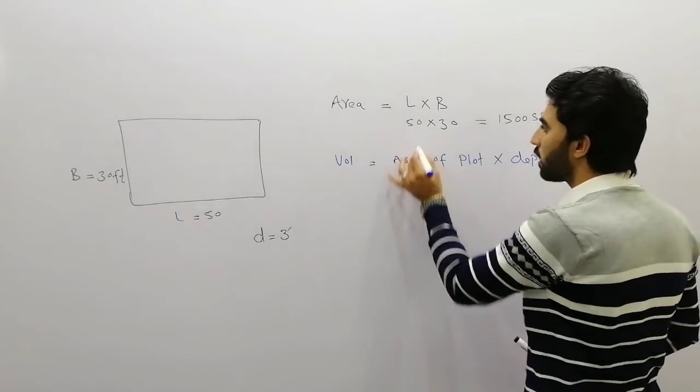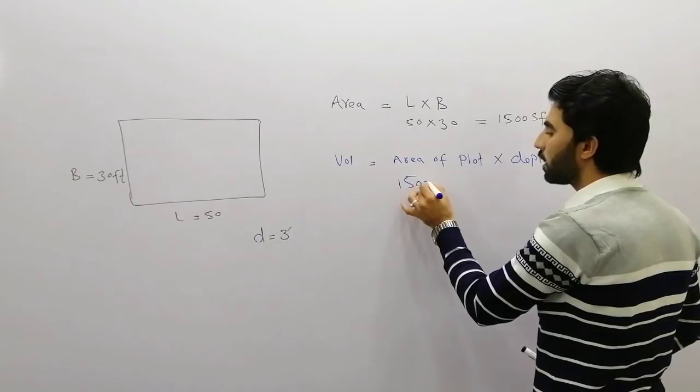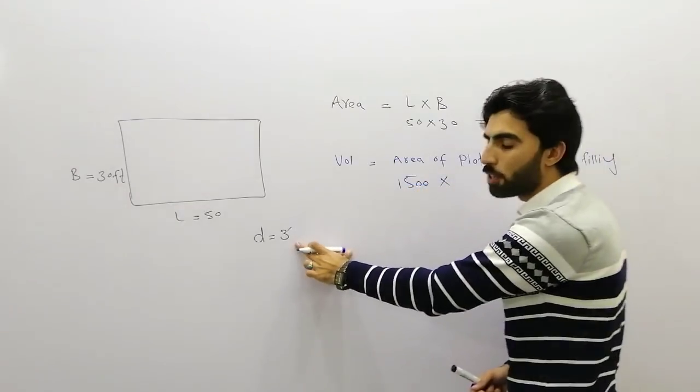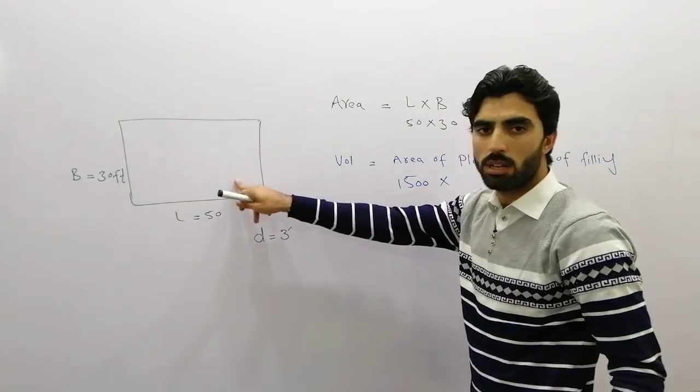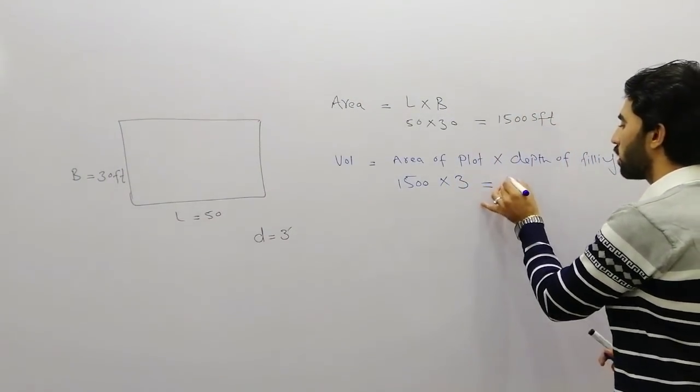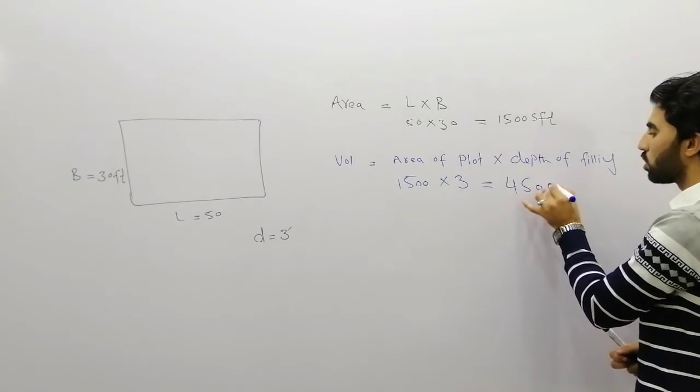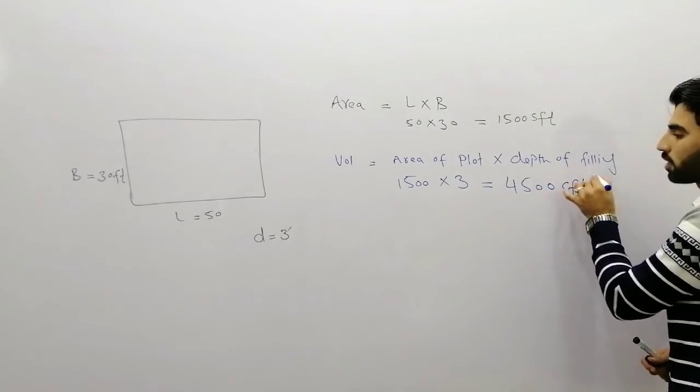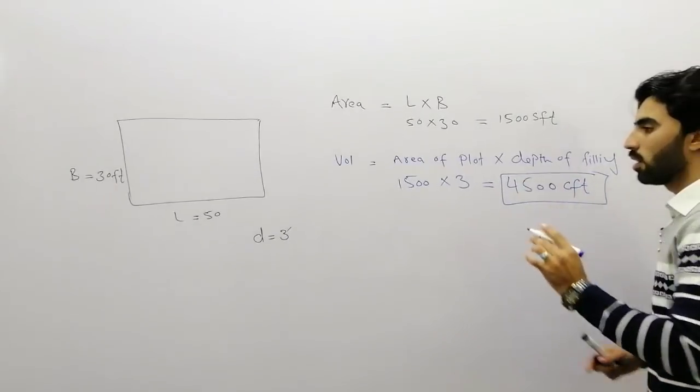You can see here that is 1500 square feet multiplied by depth of filling, which is 3 feet we required to fill this plot. So 3 feet, it will give us 4500 cubic feet.